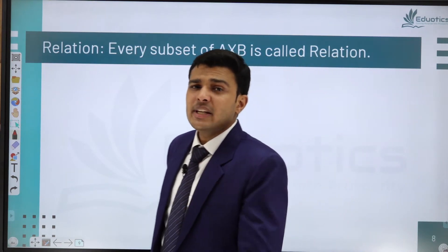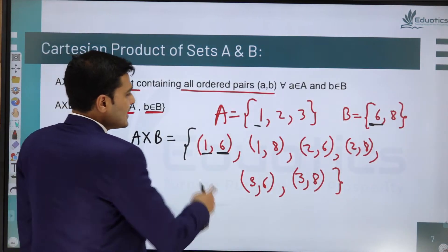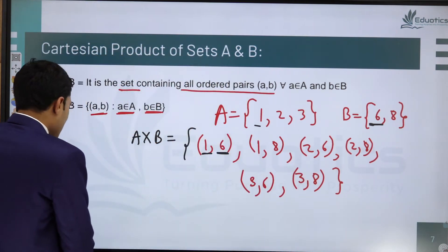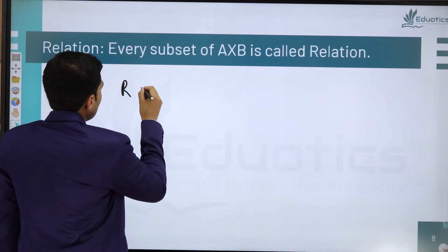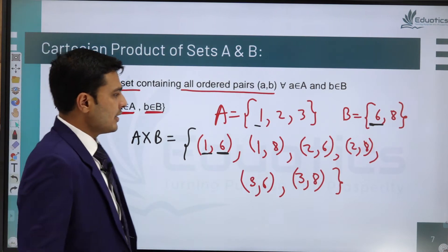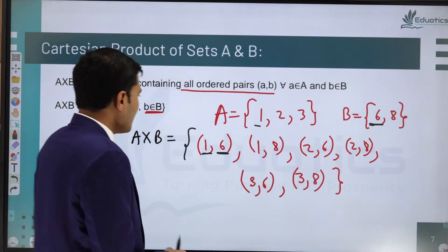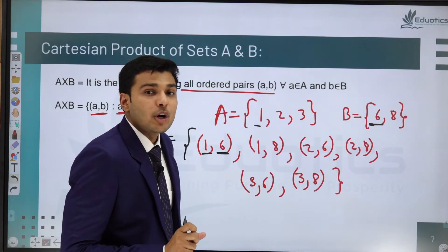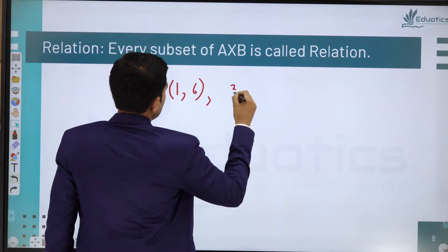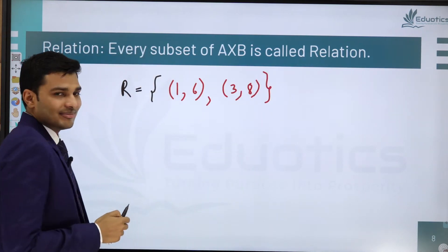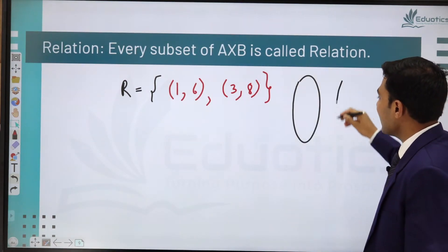Now, what is the meaning of relation? A×B currently has six elements. Any subset of A×B is called a relation. A subset means you can take some elements, all elements, or no elements. For example, if I take the subset {(1,6), (3,8)}, this is one relation. But is this a function?